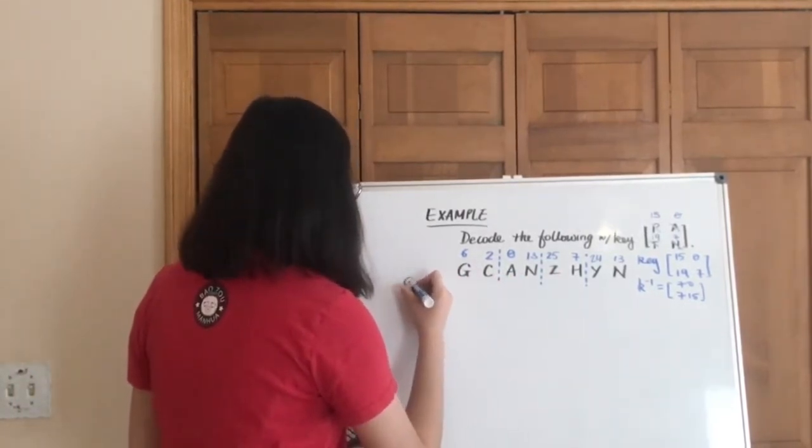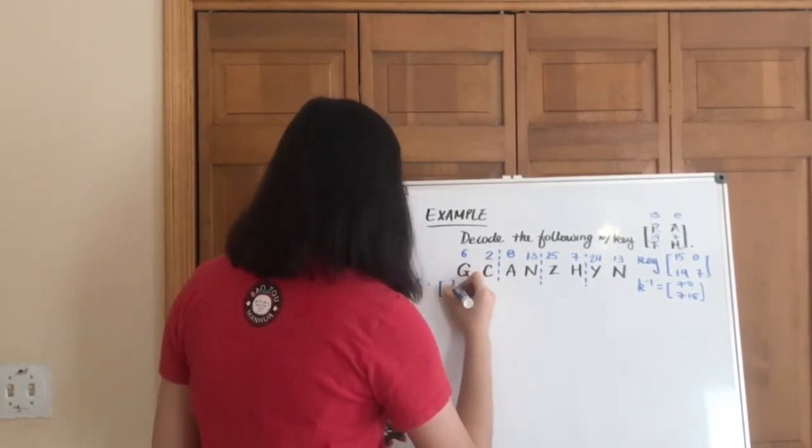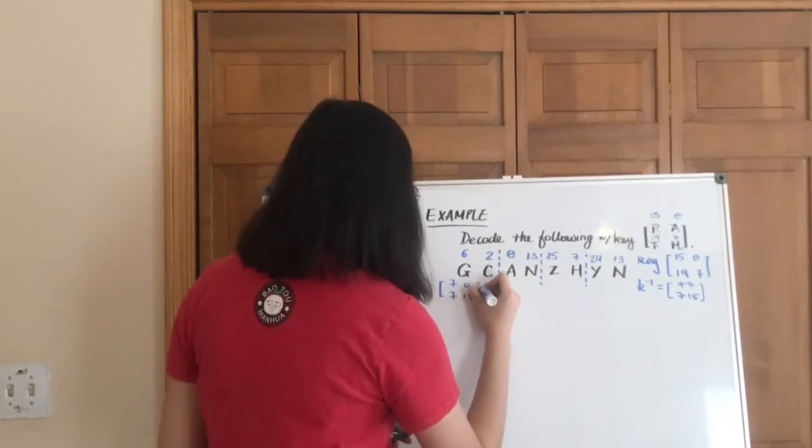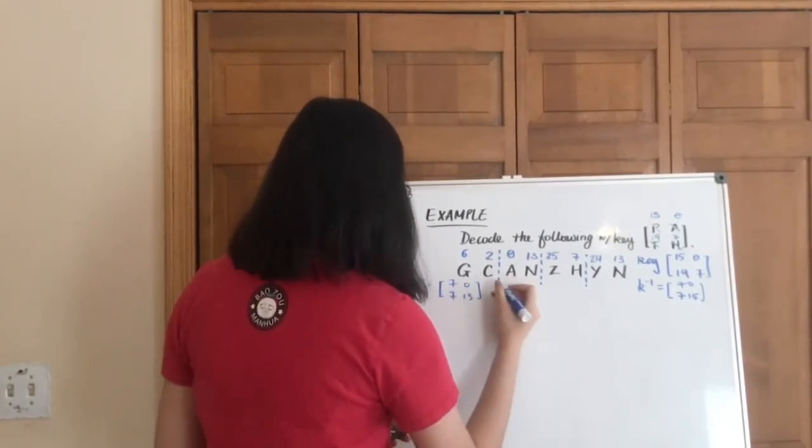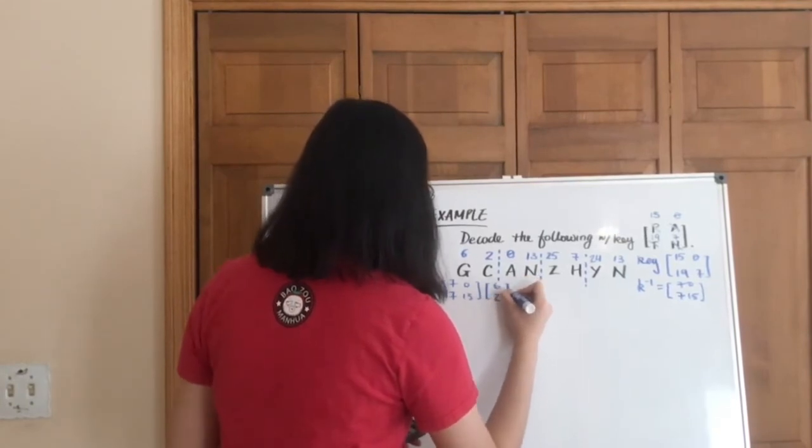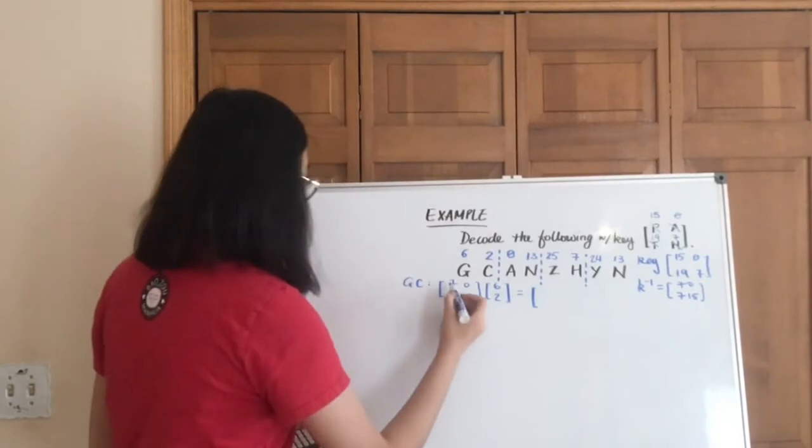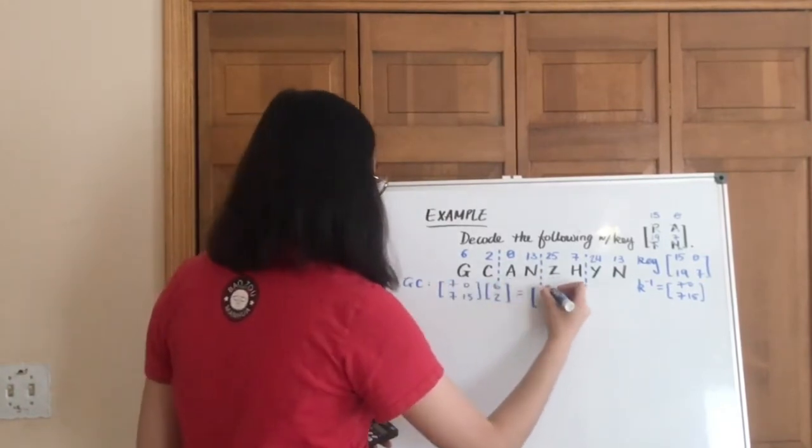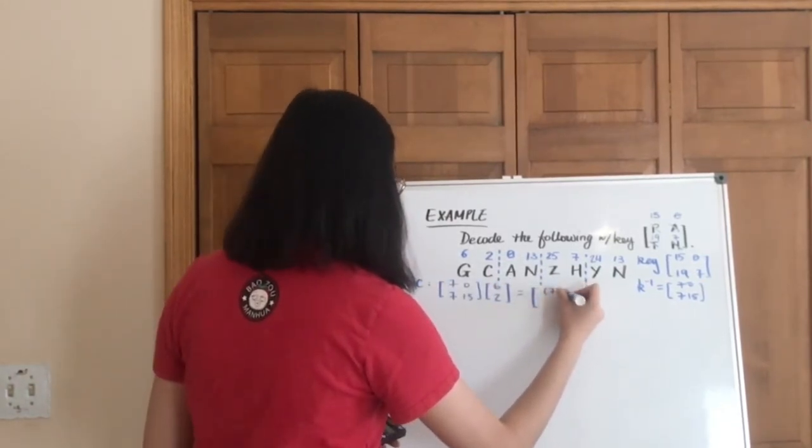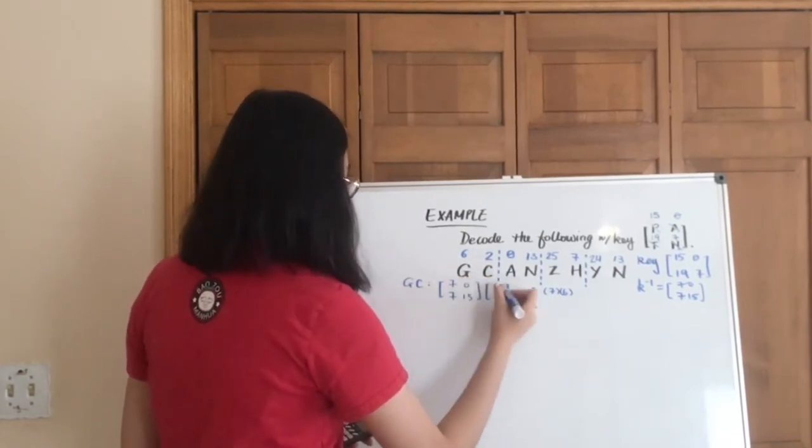And then the next thing we do is we're going to multiply the inverse of the key by each group of two letters that makes the matrix. So, let's start with g and c. 7, 0, 7, 15, multiplied by 6, 2, which gives us, so 7 times 6, plus 0 times 2.